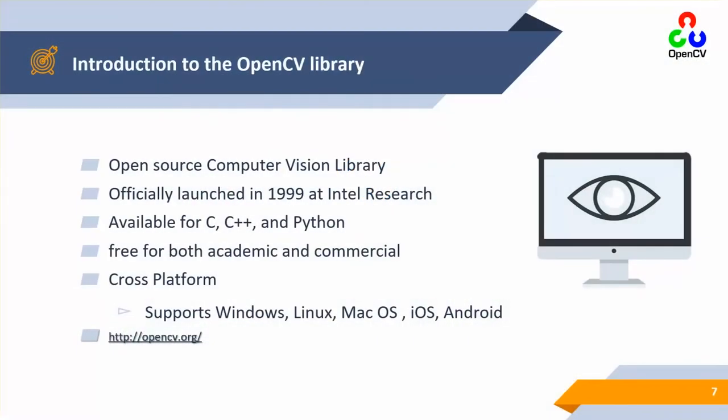When we talk about the very basics of OpenCV, we can say that it is an open source computer vision library. The advantage of OpenCV being an open source library is that it is available freely — you can add your own codes, there are no charges for using this library, no licensing. You can just download it from the internet and use it in your applications. It was officially launched in 1999 at Intel Research Lab.